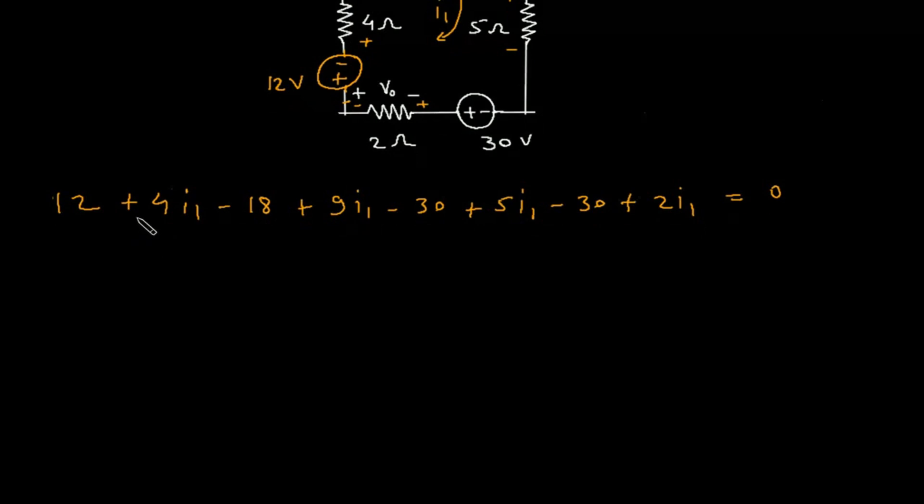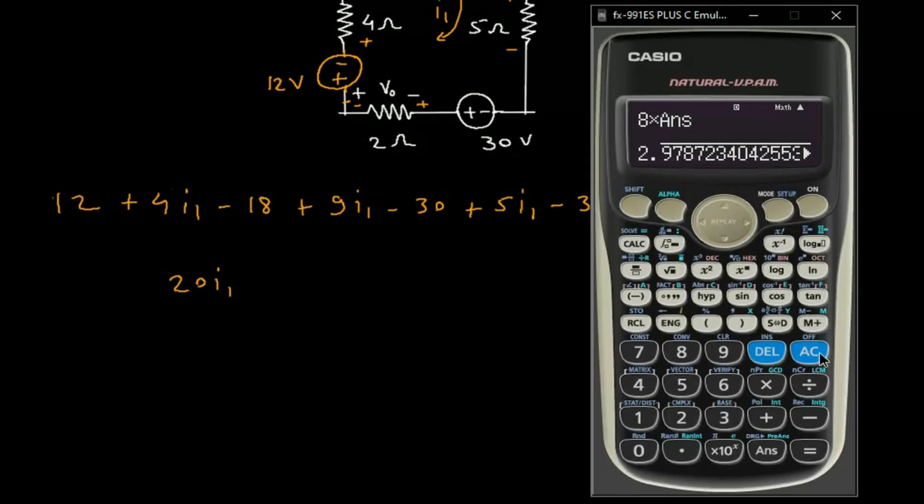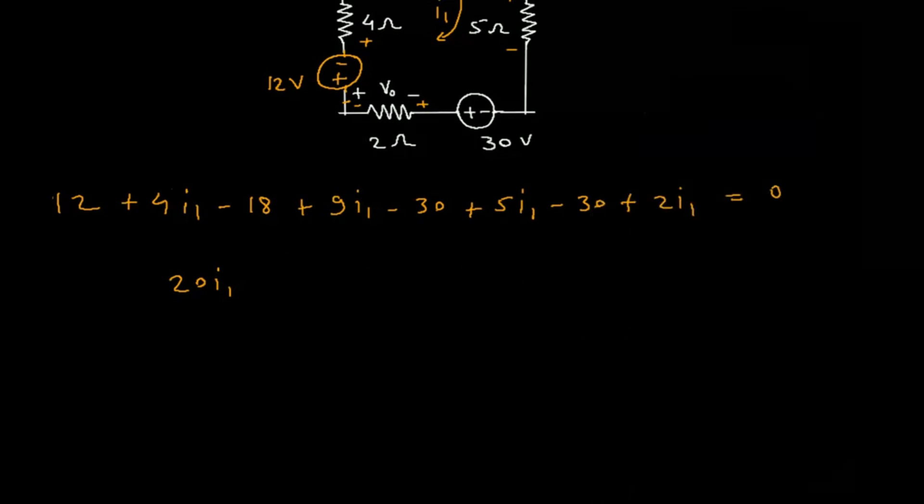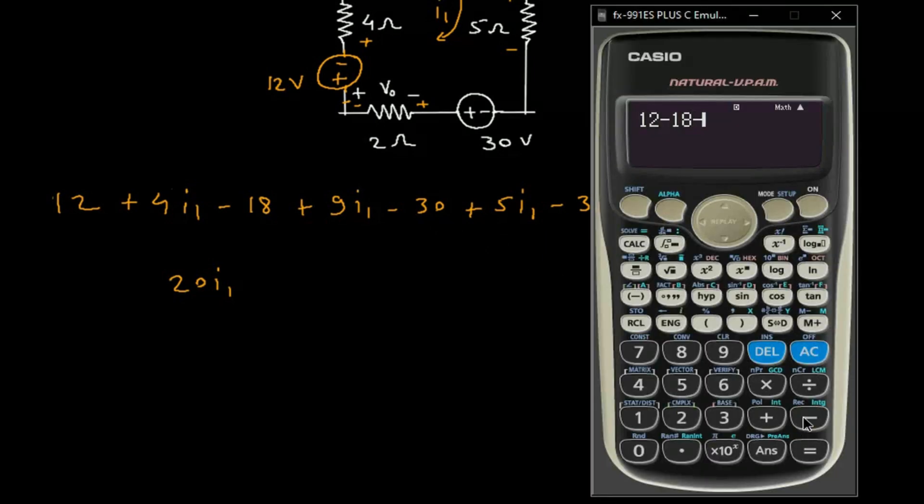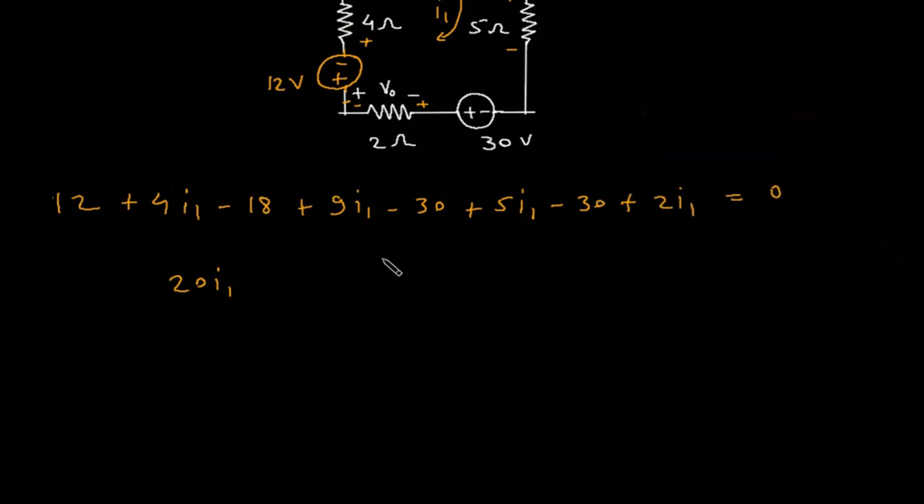Now this will be 4 plus 9, which equals 13. 13 plus 5 is 18. 18 plus 2 will be 20 I1. And this will be 12 minus 18 minus 30 minus 30, which is minus 66. Minus 66 equals 0.